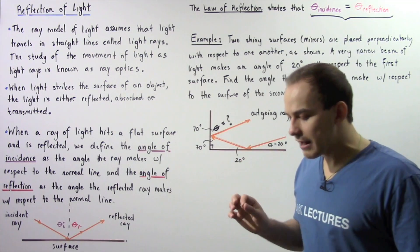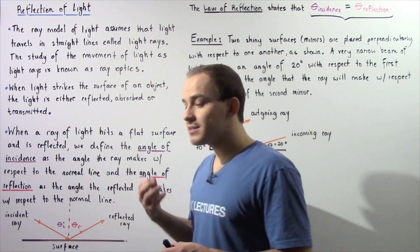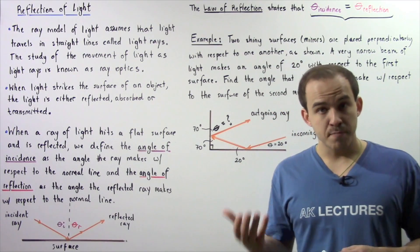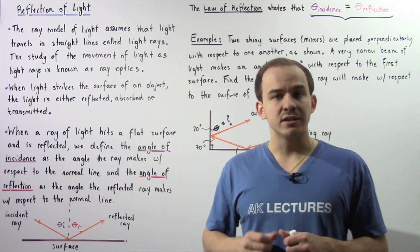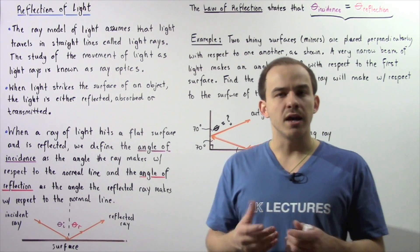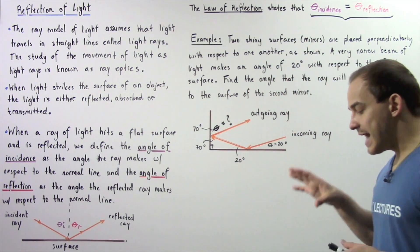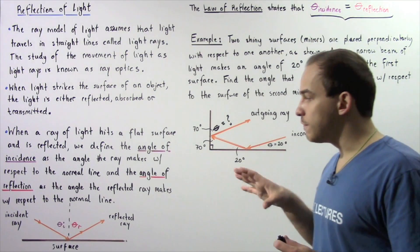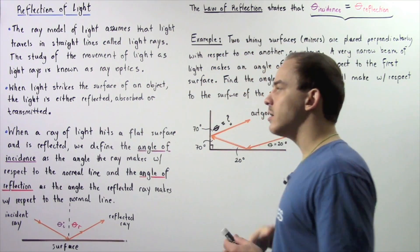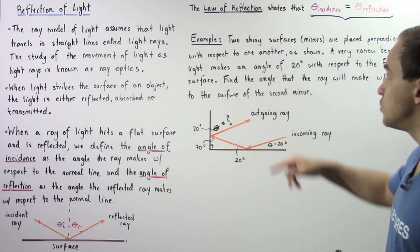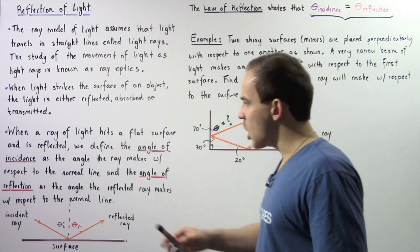Let's suppose light is traveling and it hits the surface of glass. Because glass is essentially transparent, some of that light will be reflected, some will be absorbed, and some will be transmitted through the glass. In this lecture, we're going to focus primarily on the reflection of light off of surfaces, and we're going to look at the law of reflection.